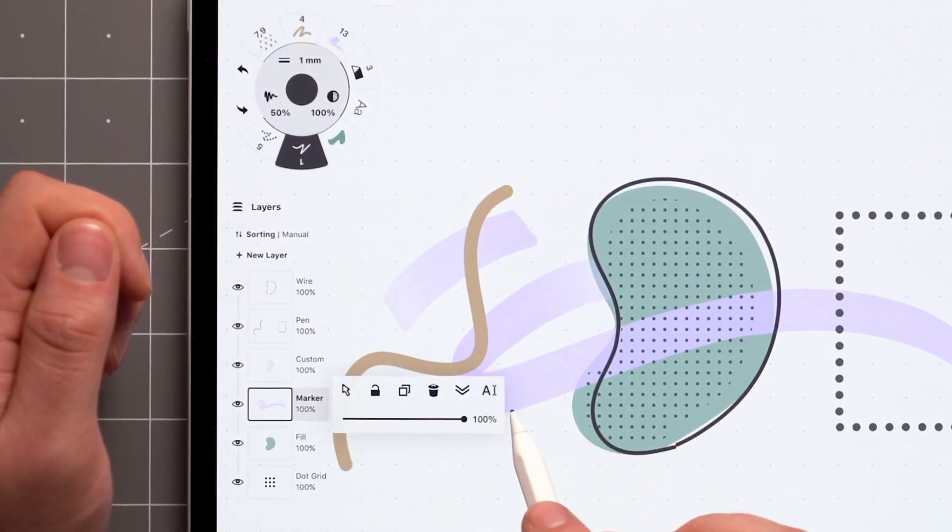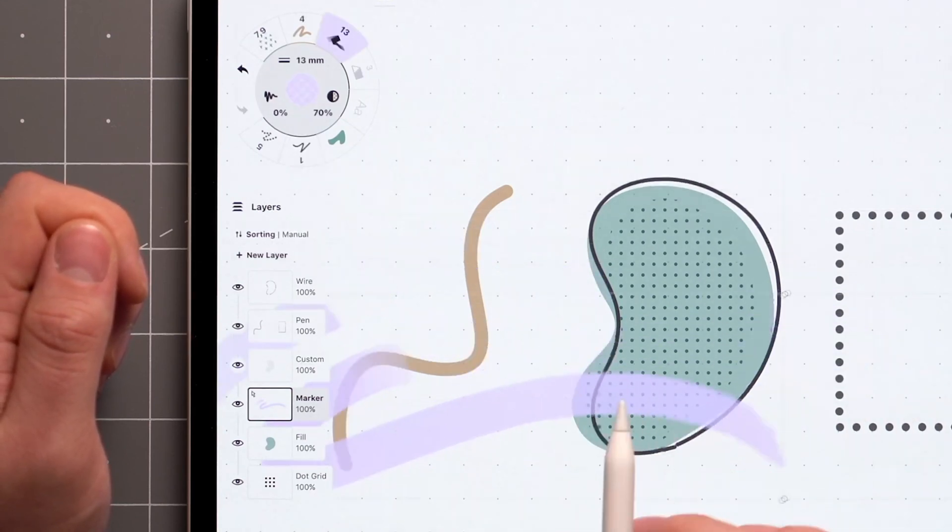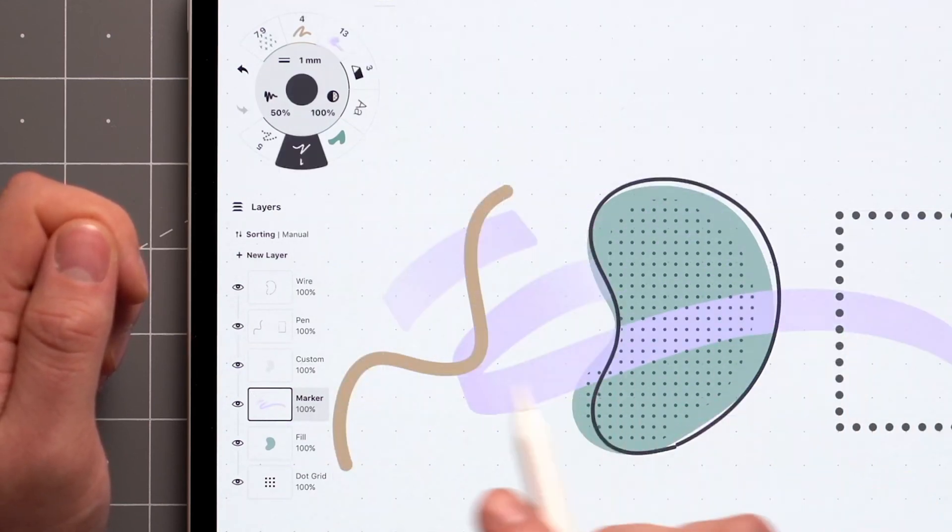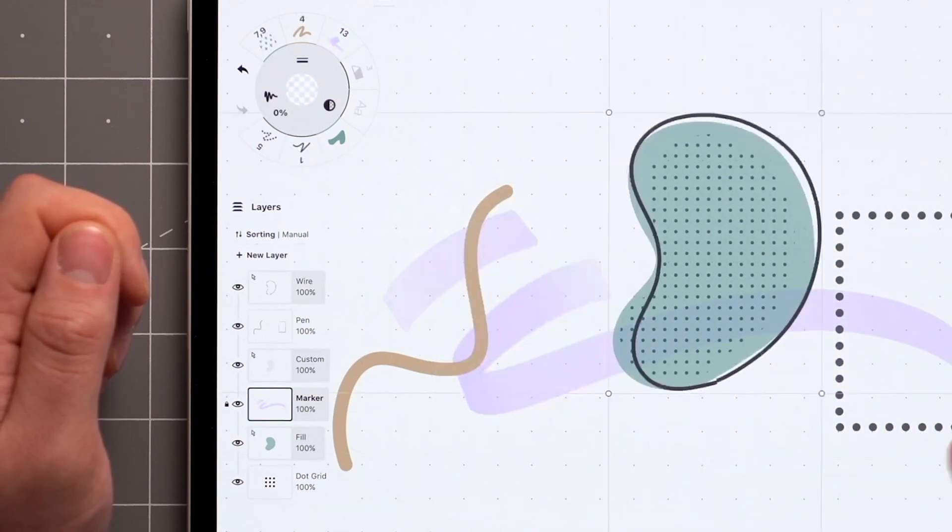Tap on an active layer and you'll find several commands as well as an opacity slider. The first allows you to quickly select the contents of the layer. The second locks everything on the layer for when you need to exclude things when making selections on canvas.